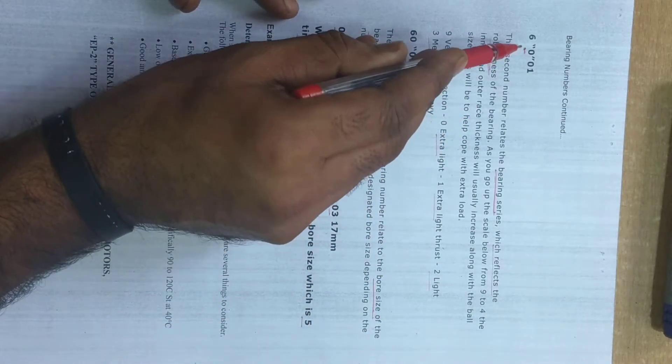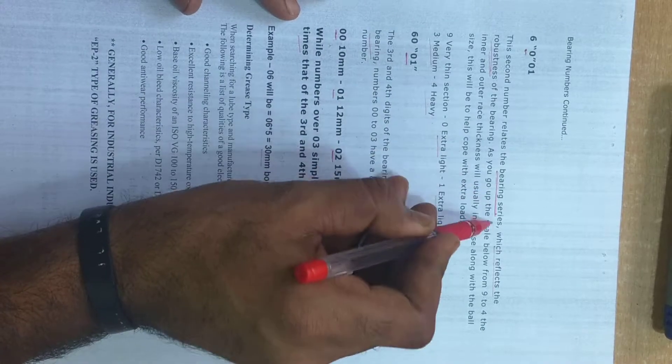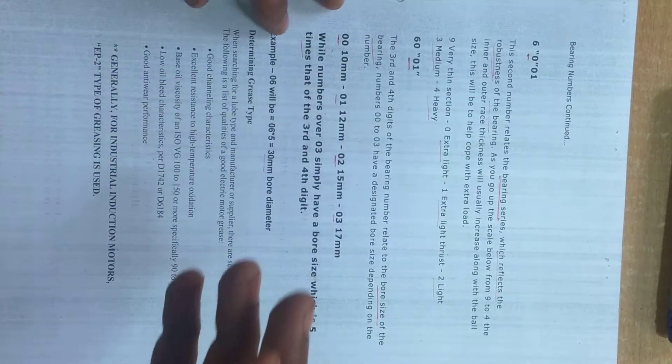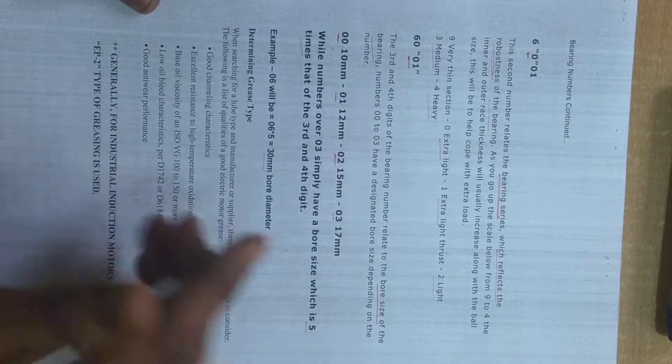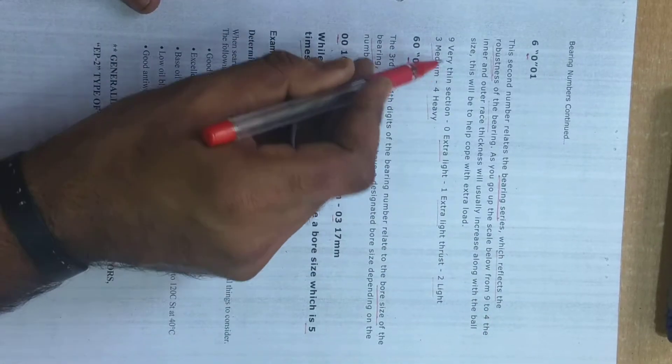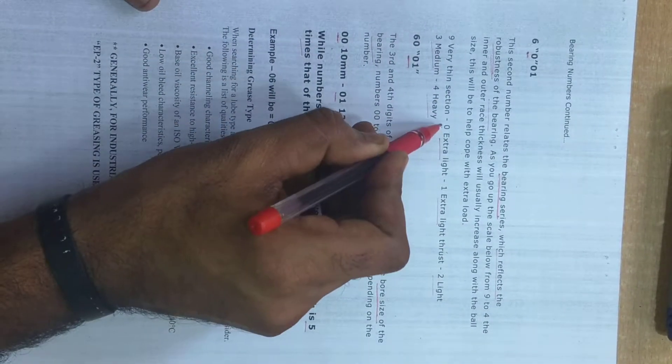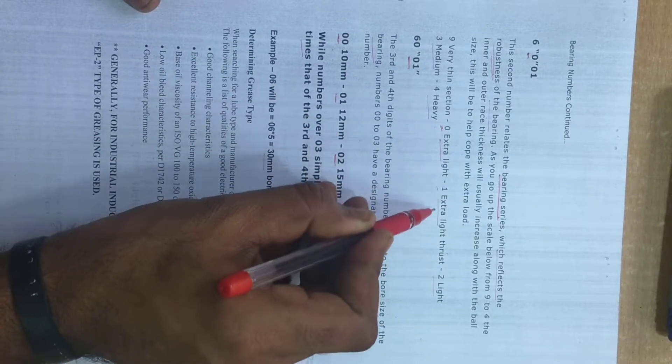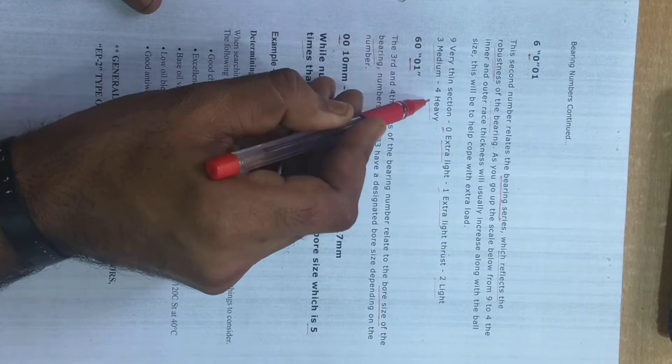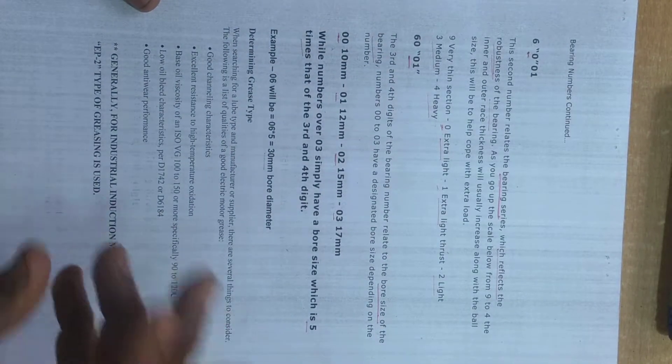Going to the second number, that is 0 in our example. This is the bearing series, which reflects the robustness of the bearing, the hardness of the bearing. That is classified into six types. 9 indicates very thin section, 0 indicates extra light, 1 indicates extra light thrust, 2 is light, 3 is medium, 4 is heavy. You will find 2 and 3 also in bearing covers.